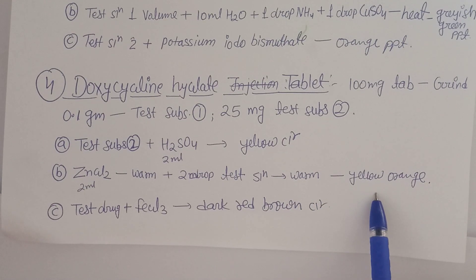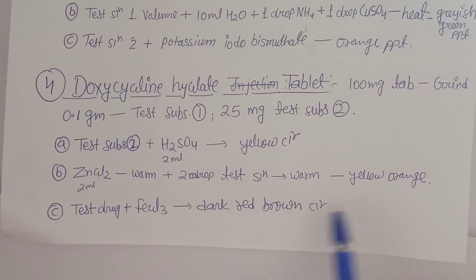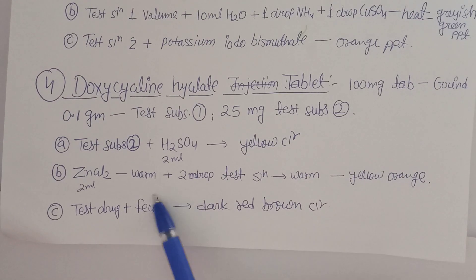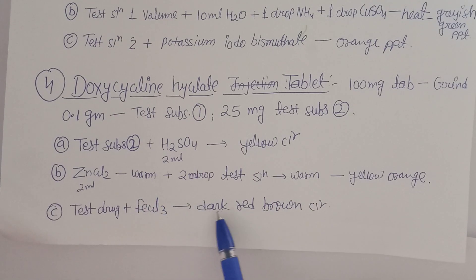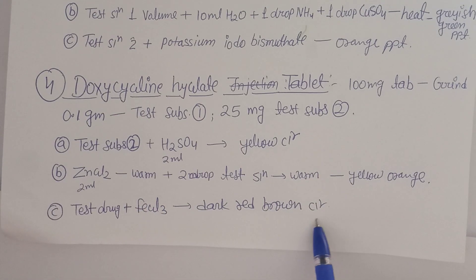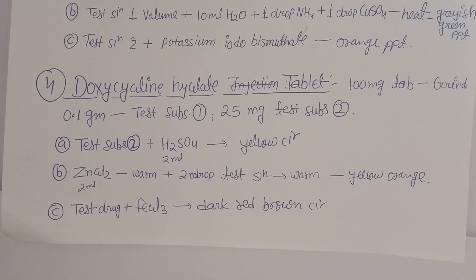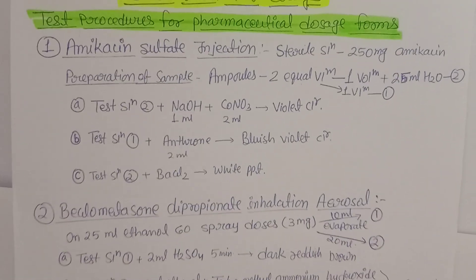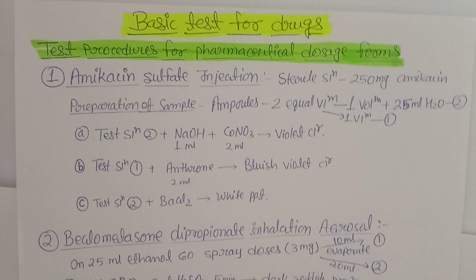Third test for doxycycline: add FeCl₃ (ferric chloride) to the test substance. A dark red-brown color is observed, confirming the presence of doxycycline in the given tablet sample.